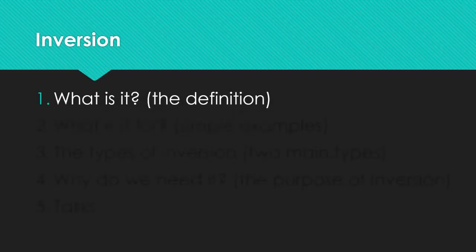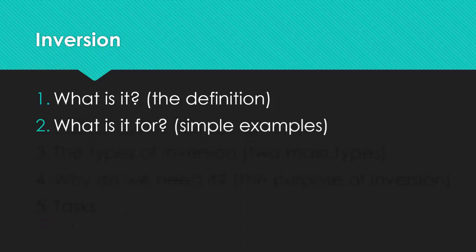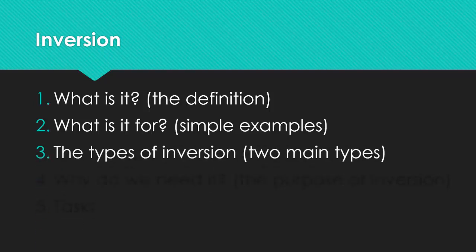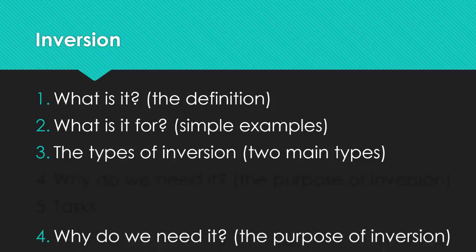First, what is it? And we will talk about the definition of the word. Second, what is it for? And we will read simple examples. Third, the types of inversion. There are two main types of inversion. And number four, why do we need it? The purpose of inversion. And five, tasks. You will do some tasks in order to practice a newly learned skill.